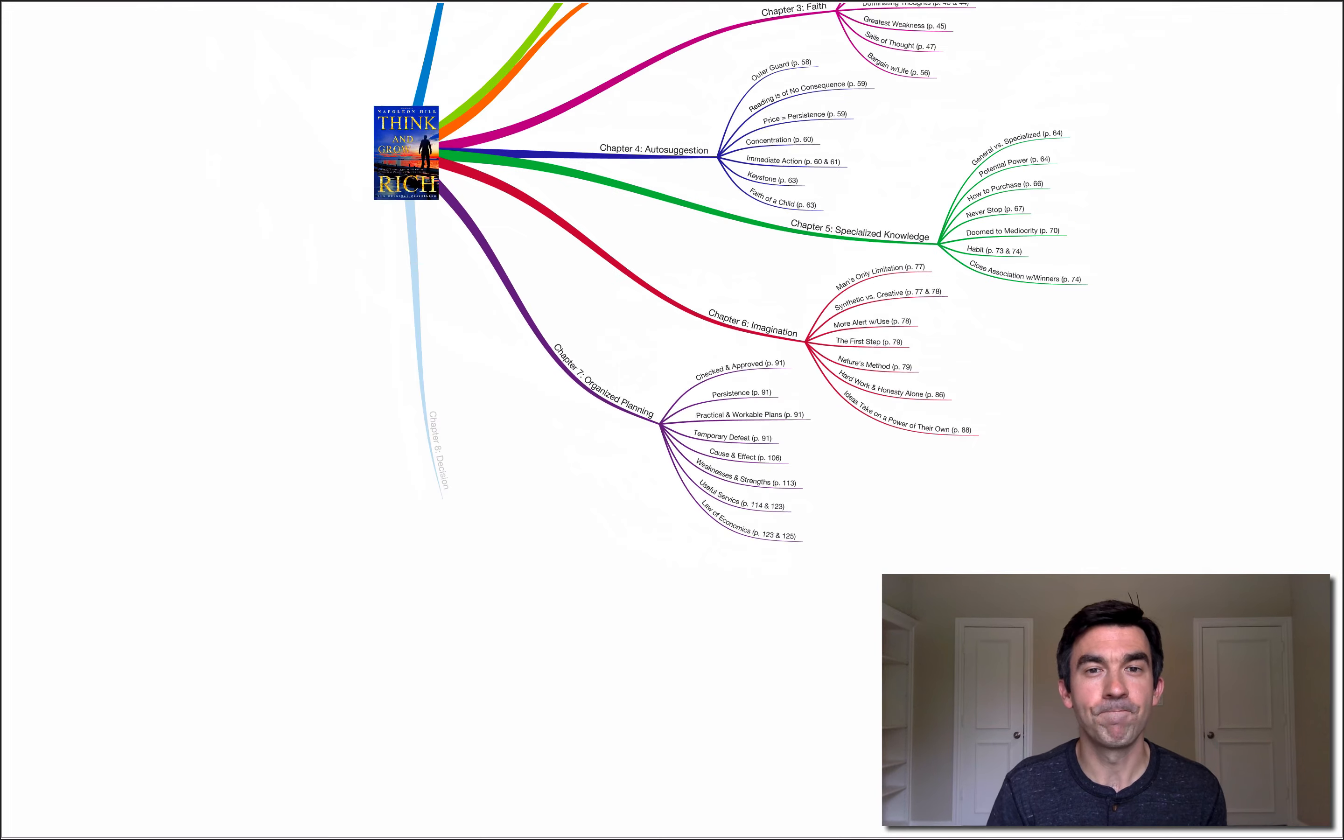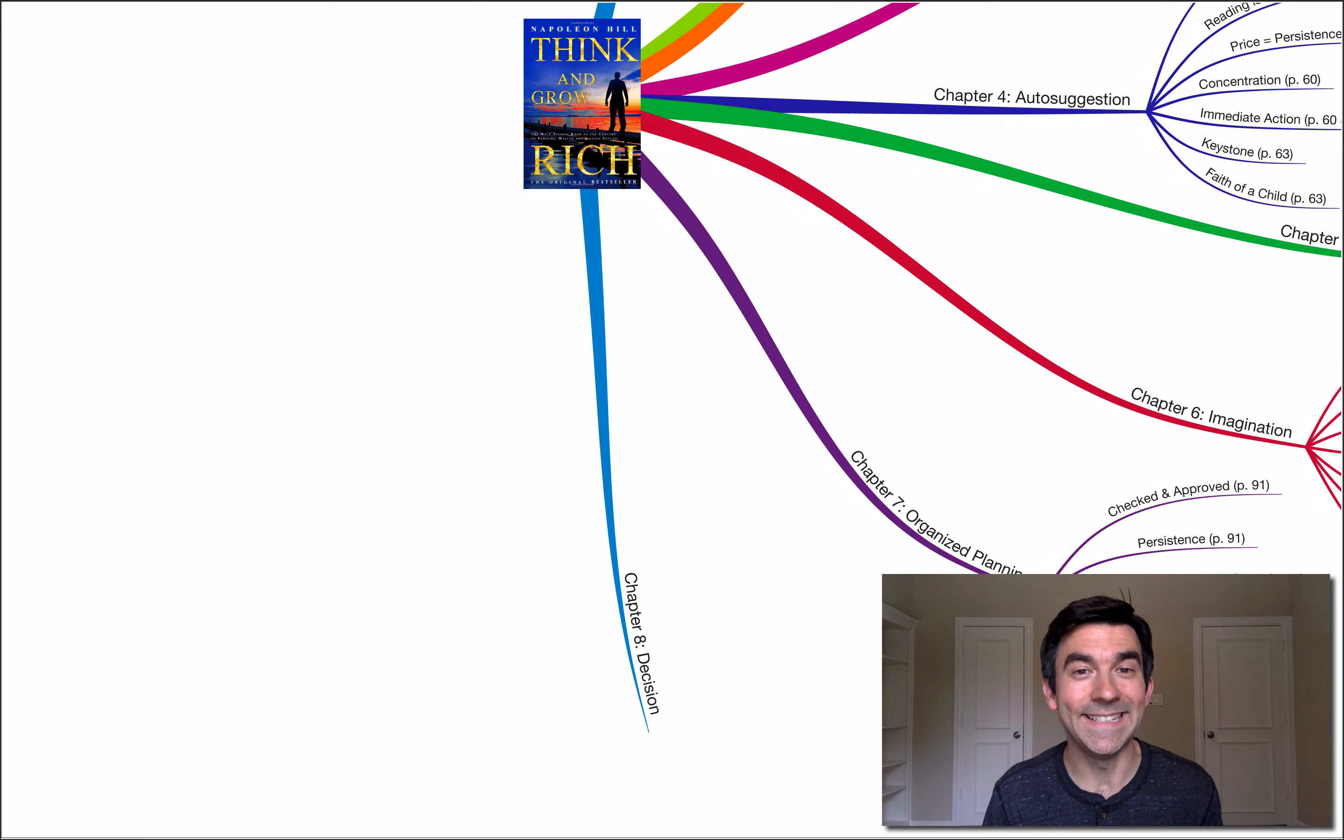In the next video, we're going to be talking about chapter eight, decision. Really cool chapter. I know in my life, I've struggled a lot with being indecisive. And this is one of those chapters that really helped me to not only become more decisive in my life, but it also helped me to stop changing some of the decisions I've made shortly after I've made them. So I look forward to seeing you and serving you there. Take care.